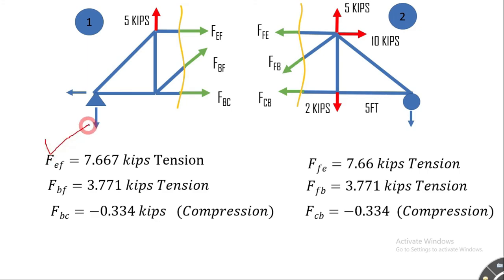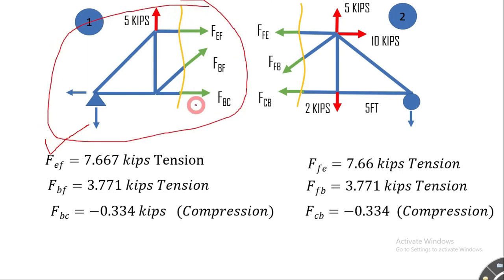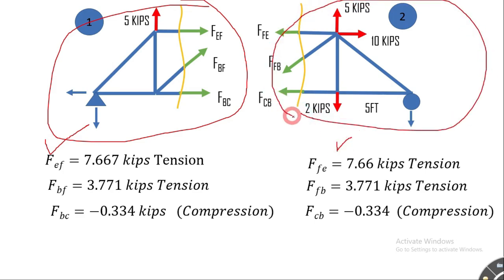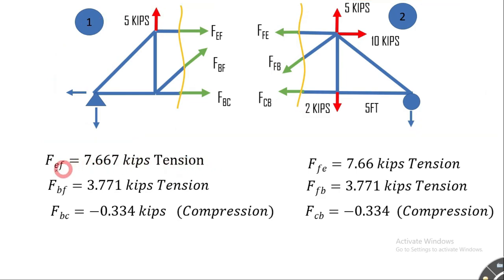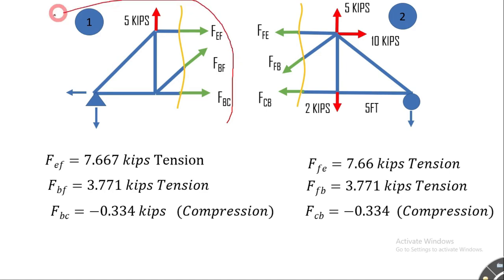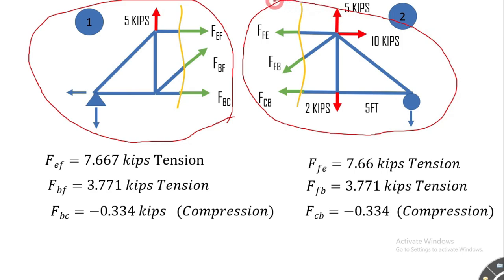These are the results obtained by applying conditions of equilibrium to the left section truss, and these are the results from the right section truss. Note that FEF equals FFE, and similarly for the other force pairs. You only need to apply equilibrium to one part of the truss, but applying it to both parts lets you verify your calculations. And we are done with the question. Thank you.